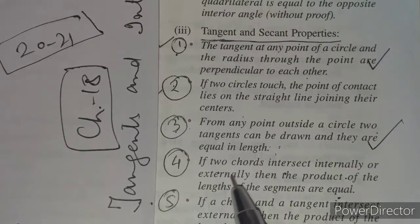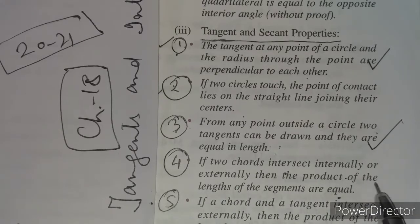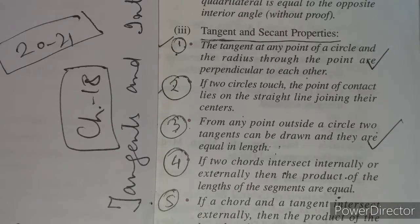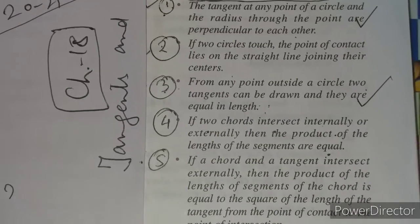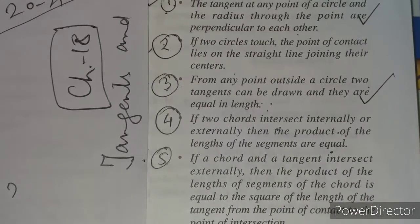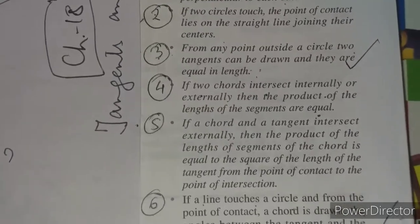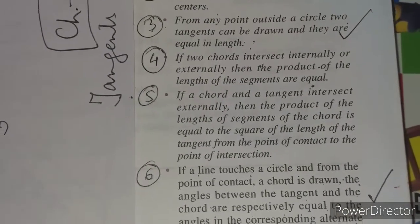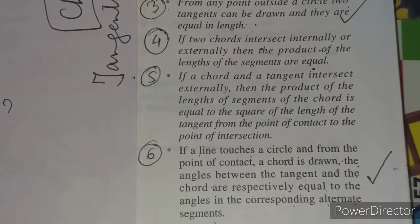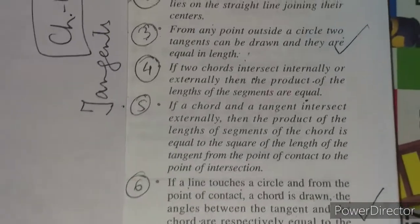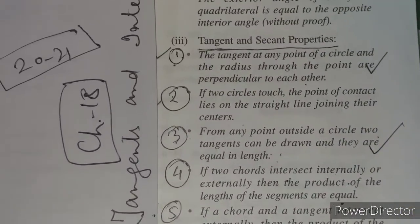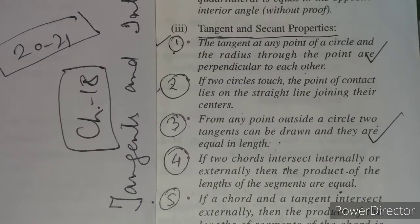The fourth property was: if two circles intersect internally or externally, then the product of the lengths of the segments are equal. The fifth was a longer one based upon the chord and the tangent intersecting each other. The sixth was: if a line touches a circle and from the point of contact — this was based upon the alternate segment. So in this order, the six properties have been given in the syllabus.